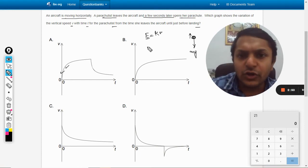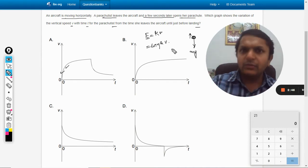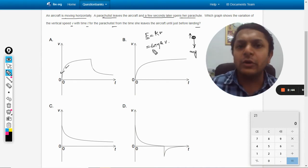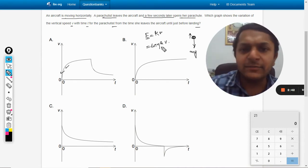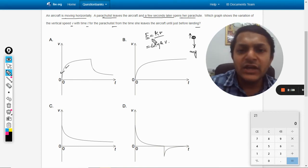Basically it is 6πηrv, but we don't need to go into the detailed formula. You can treat it as kv, where k is a constant and v is the velocity with which the body is moving down.